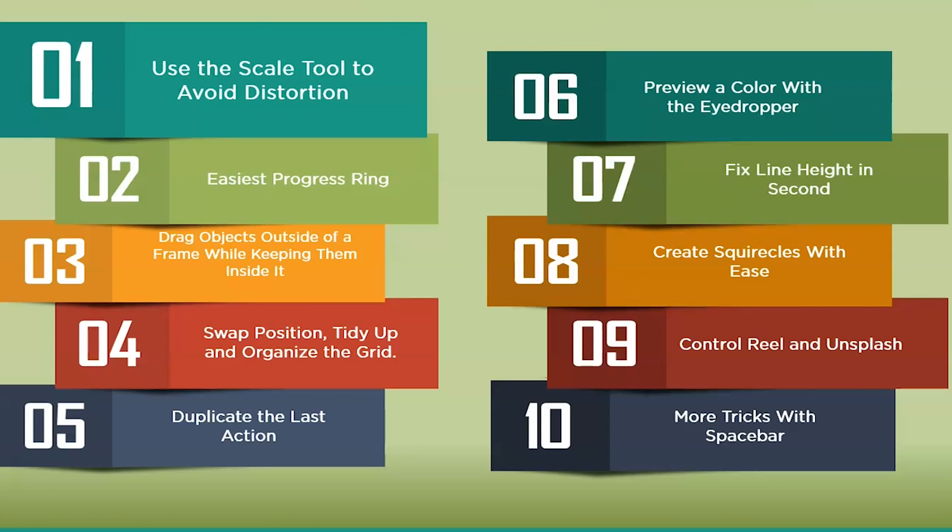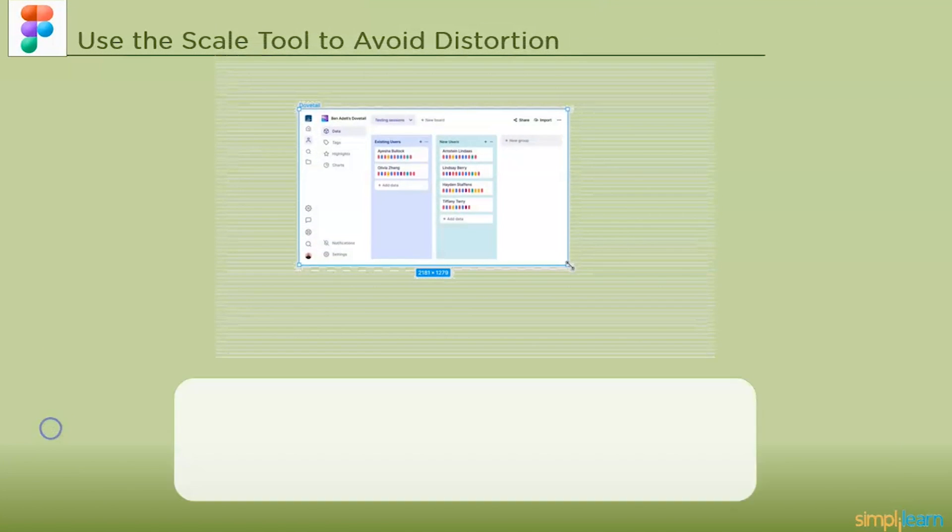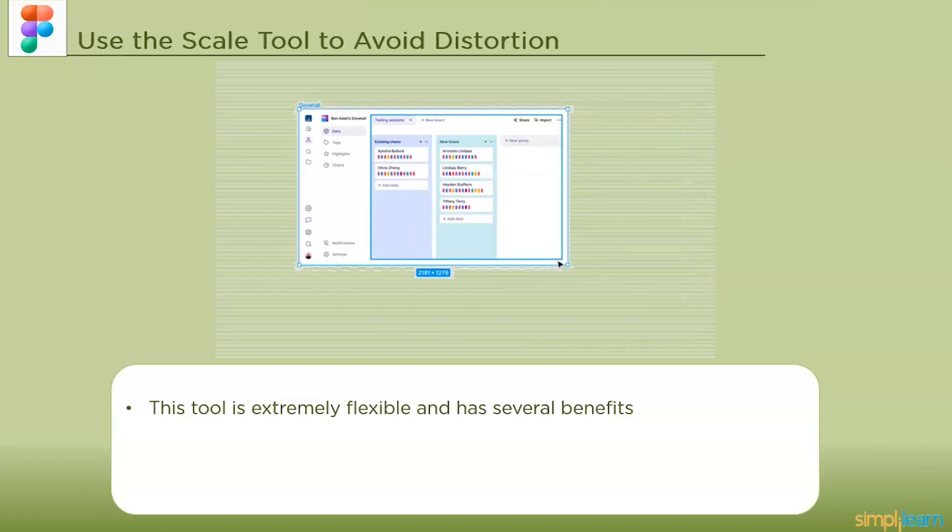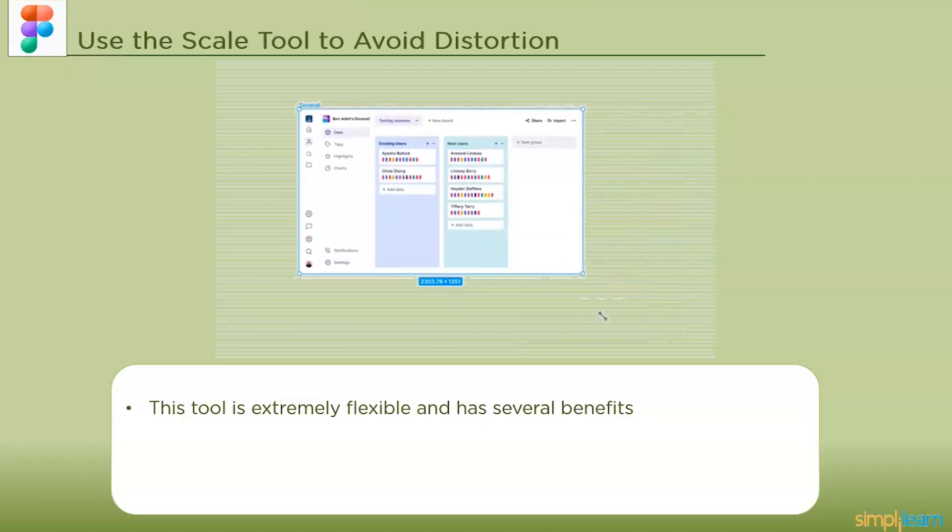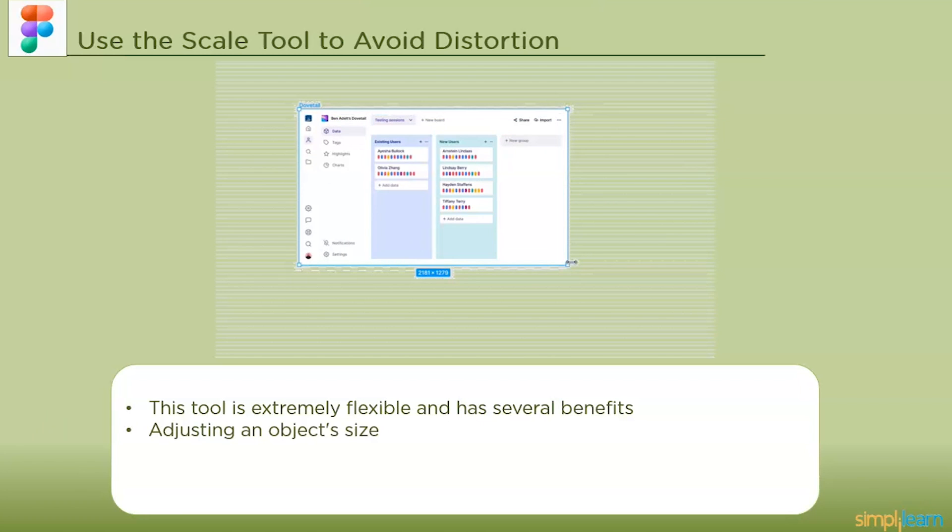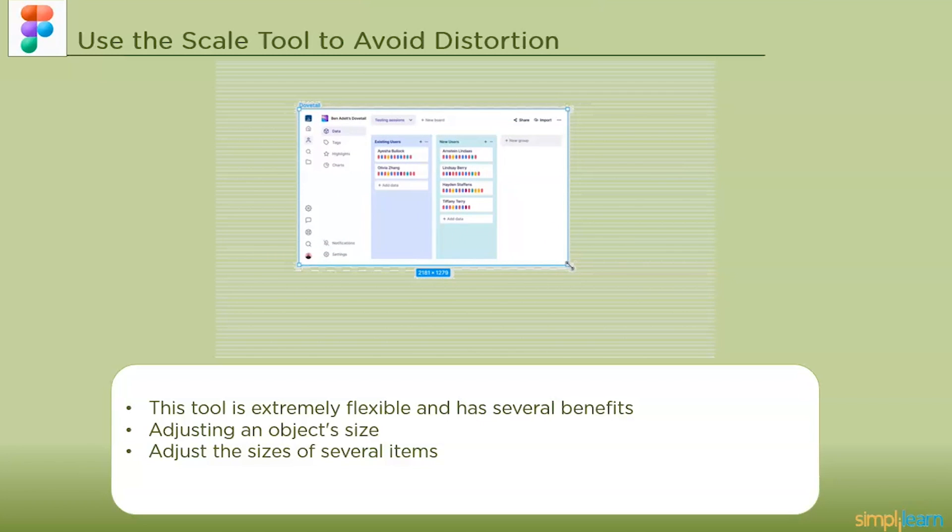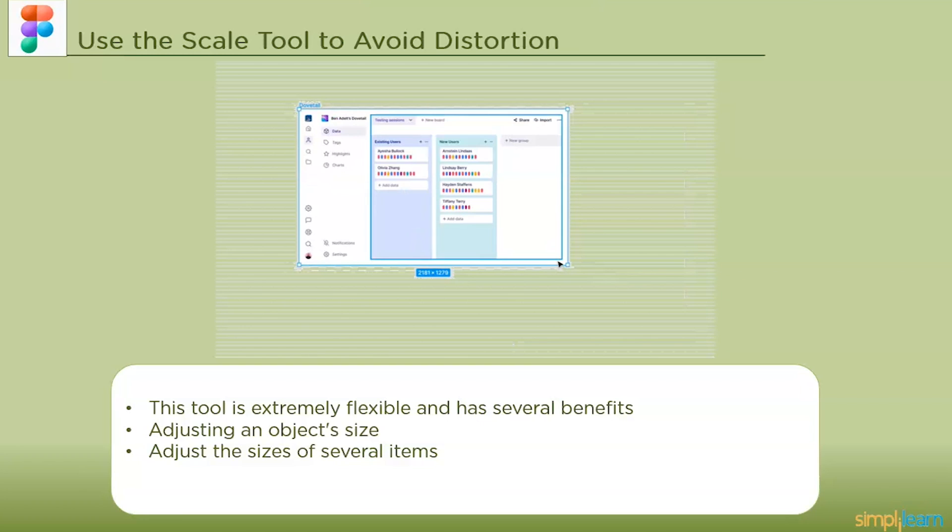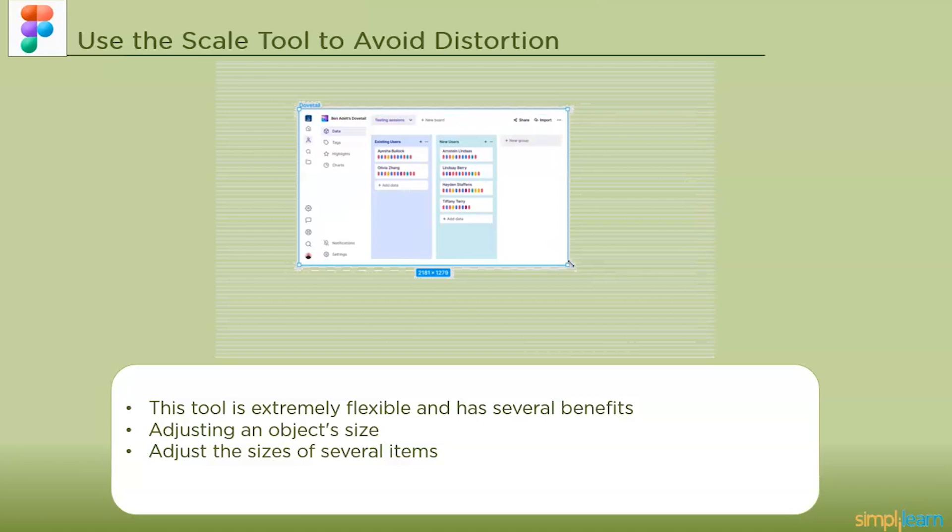The first one is use the scale tool to avoid distortion. With the scale tool you can keep your design pixel perfect. To use it choose what you want to scale, press K on the keyboard and done. This tool is extremely flexible and has several benefits. First, adjust an object's size without picking up a key. Second, you may adjust the sizes of several items at once with the free transform tool. Third, you may rotate an item using the free transform tool. Among the most crucial design concerns is scale which needs to be given great thought in each project.